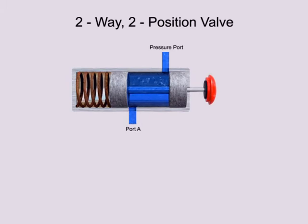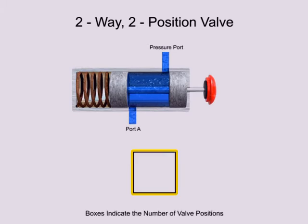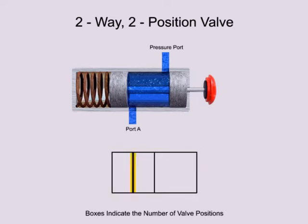To simplify fluid system drawings and schematics, all valves can be represented graphically. Boxes, sometimes called envelopes, are used to indicate the number of valve positions. Since this is a two-position valve, its graphic representation has two adjacent boxes. Continuous lines are used to indicate fluid flow between ports.